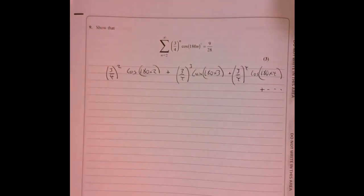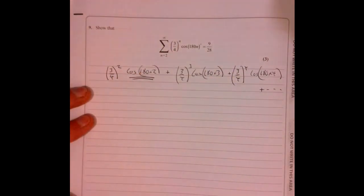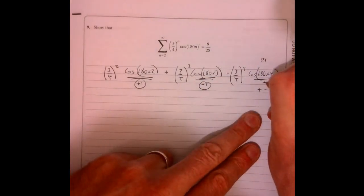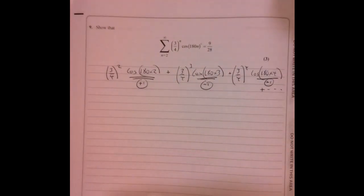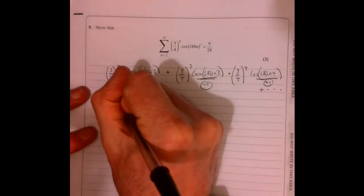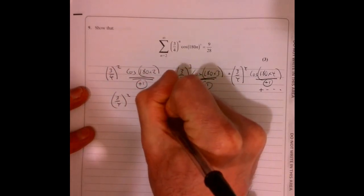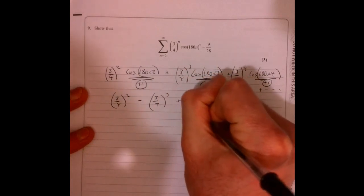Right, and then we'd carry on from there. Okay, now what you should notice is that that bit is equal to one, that bit is equal to minus one, and that bit is equal to plus one. And then the next one's gonna be minus one and so on. So what does that give us? That gives us three over four squared, and then we're gonna be taking away the next one, and then we plus the next one.